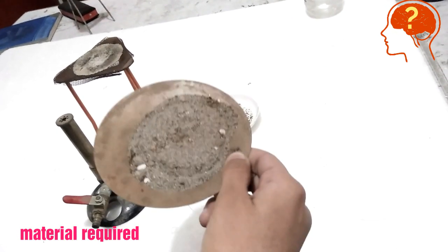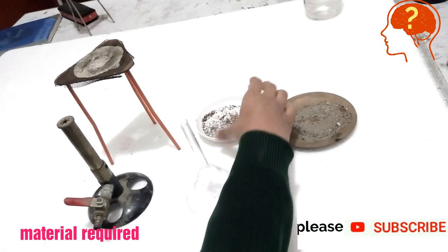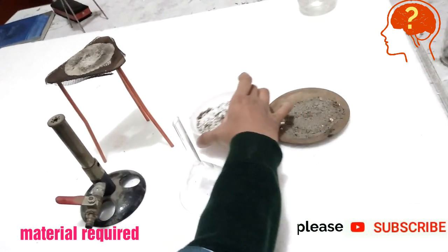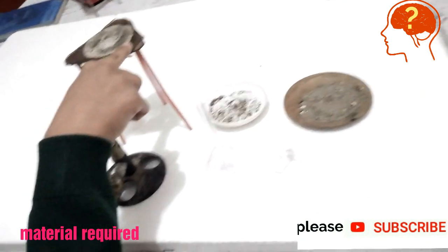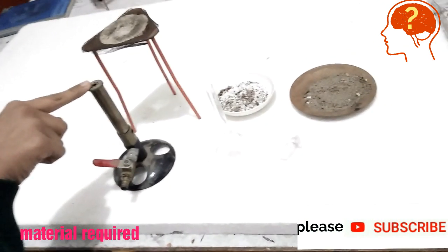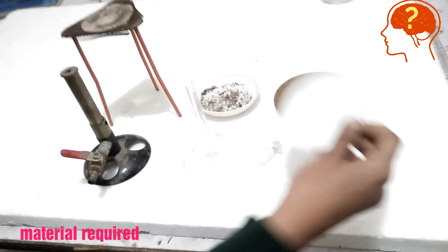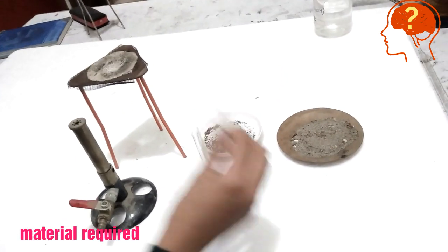you need funnel, sand bath having sand, china dish having mixture of sand and naphthalene, tripod stand, bunsen burner, filter paper and cotton.